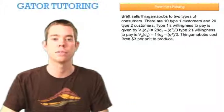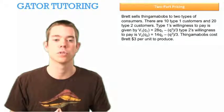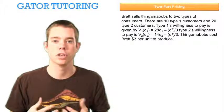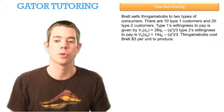Brett sells Thingabobs to two types of consumers. There are 10 type 1 customers and 20 type 2 customers. Then it gives us the value function for each type of customer and tells us that Thingabobs cost Brett $3 per unit to produce.